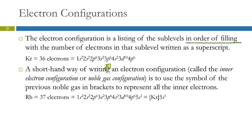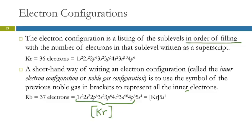Here is the electron configuration for krypton, which has 36 electrons. Notice that 4s comes before 3d — if you switch them, the configuration is incorrect. For larger atoms with many electrons, writing the full configuration is tedious, so we use noble gas shorthand notation. For rubidium, which has one more electron than krypton, we write [Kr] 5s¹ — the bracket notation stands for the full electron configuration of krypton. You should be able to write both forms and understand what each means.